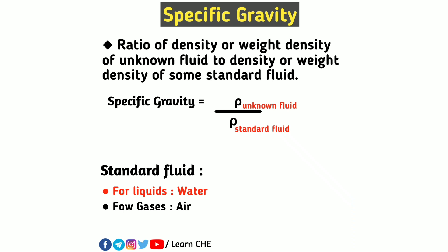The formula of specific gravity is the density of the unknown fluid divided by the density of the standard fluid. In the case of liquids, we take water as the standard fluid, or in the case of gases, we take air as the standard fluid.